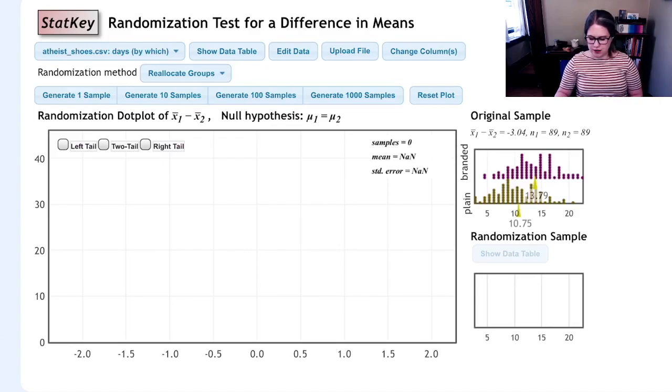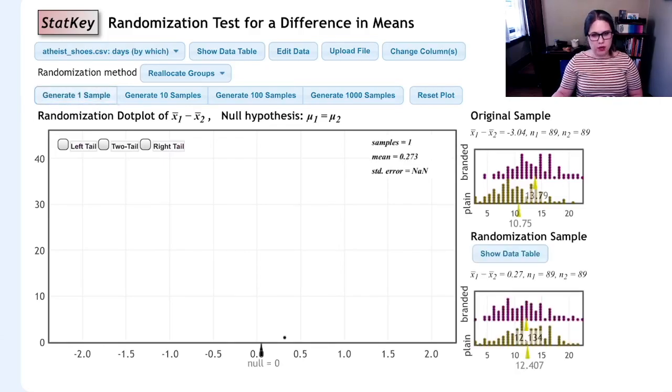If I click generate one sample, what StatKey is going to do is it is going to reallocate groups. That is, it's going to mix up the labels of branded and plain, and then it's going to use those new branded and plain packages to find the means for those groups and the difference in means. So in this case, it found a difference of 0.27 days, and then it puts one dot on the plot for 0.27 days.